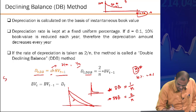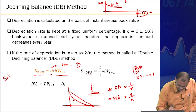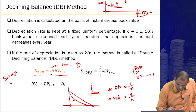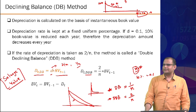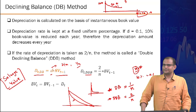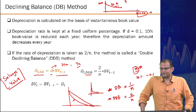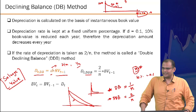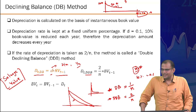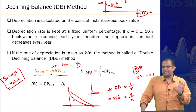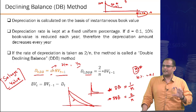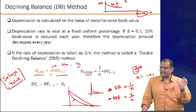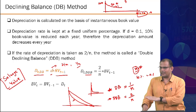An important point: salvage value is not used in the declining balance or double declining balance calculation at all. The calculation depends only on the initial amount B and the number of periods N.